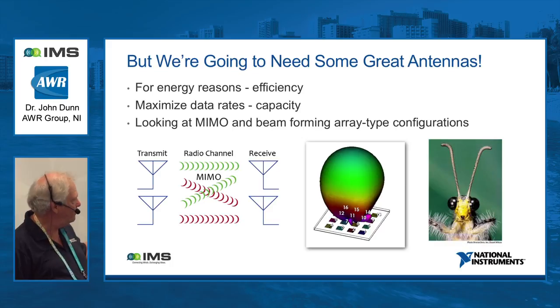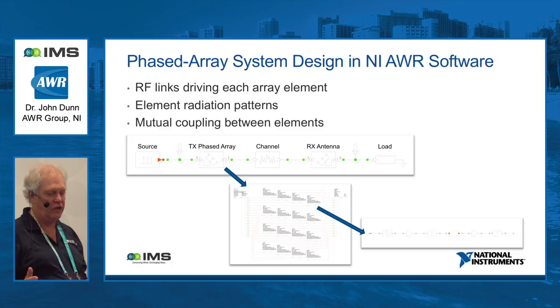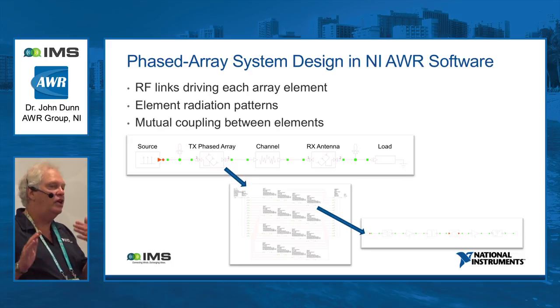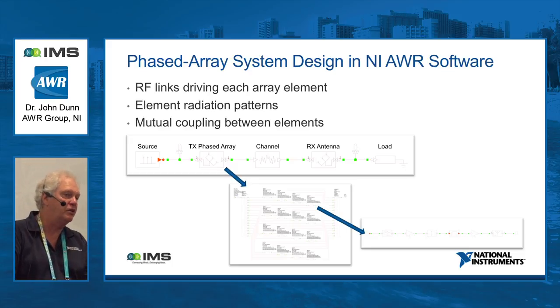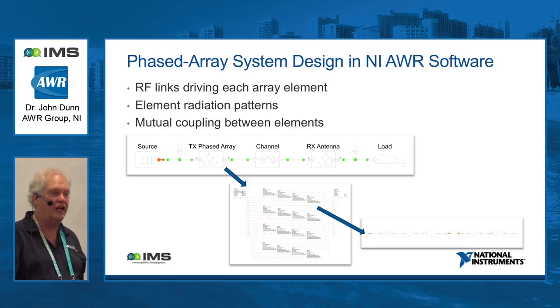A lot of people think of MIMO — massive input, massive output — as antenna to antenna. But the output could be going to six different receivers, so don't think it's just one phased array to another. Phased arrays are important; obviously if you're going to design one of these things, you have to get into phased arrays. Classically you would do the phased array using an electromagnetic simulator and antenna software. As a system engineer looking at the RF link, you really want to get the effects of the phased array and the antenna at the system level.